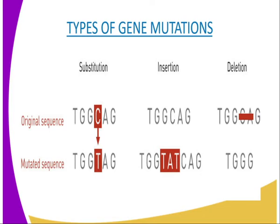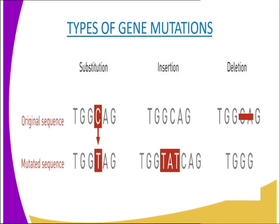Our third type of gene mutation is substitution, whereby this is the replacement of a portion of the gene with a new portion. According to our diagrammatic representation, you can see our original sequence is TGGCAG, but after mutation the gene has become TGG. So our C, which was on our original sequence, has been substituted or replaced by TAG.